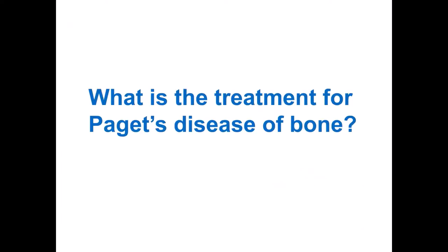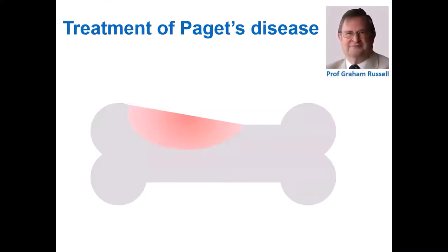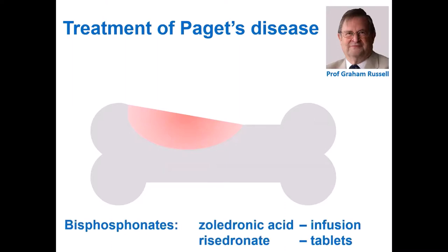So what is the treatment for Paget's disease? Thanks to the pioneering work of Professor Graham Russell and his colleagues about 50 years ago, we now have fantastic drugs to treat Paget's disease. These are known as bisphosphonates, and the gold standard is zoledronic acid, which is given as an infusion. Risedronate, given in tablets, can also be used in patients who cannot receive zoledronic acid.